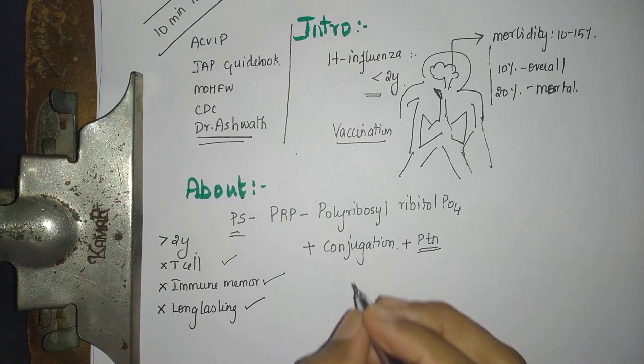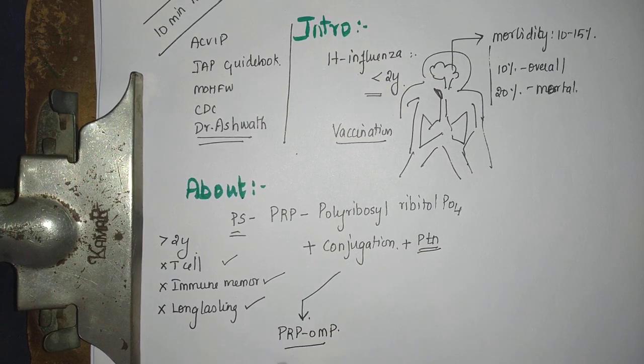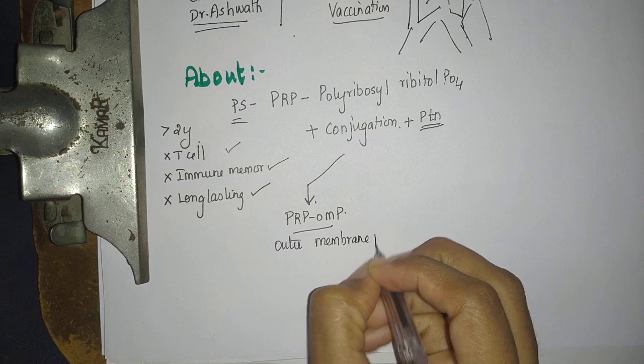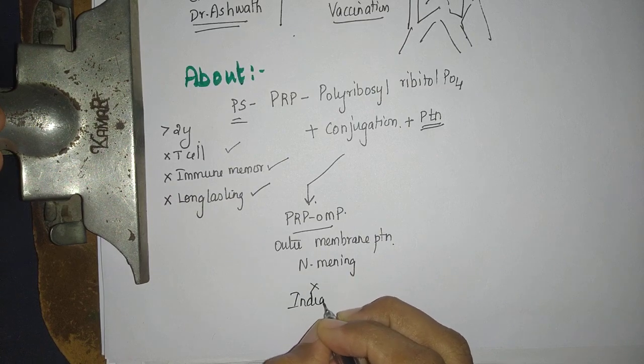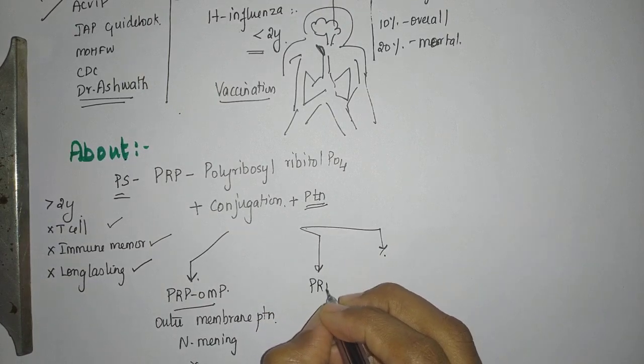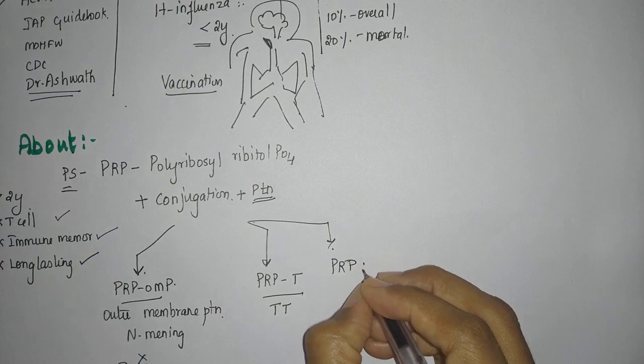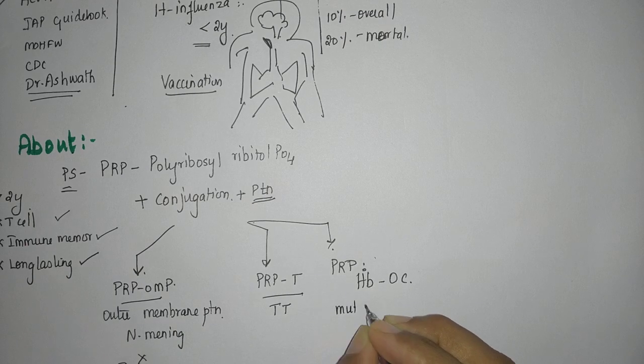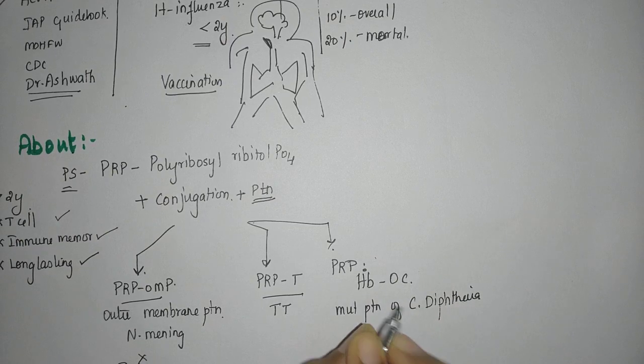So what are the proteins that they were conjugated with? One was PRP-OMP, outer membrane protein of Neisseria meningitidis. This is not available in India, so I will not talk of it now. The other two which are available in India are PRP-T which is tetanus toxoid and PRP combined with OC which is a mutant protein of Corynebacterium diphtheria.